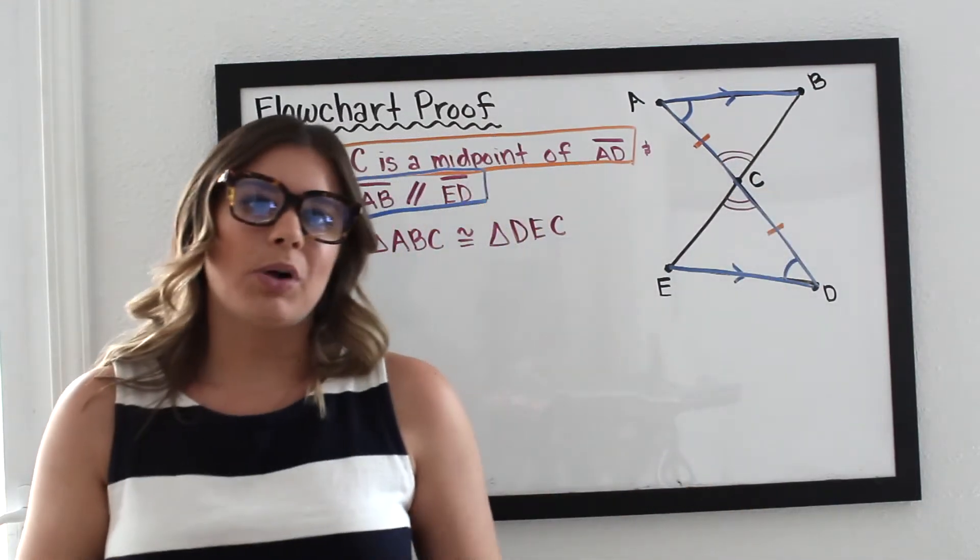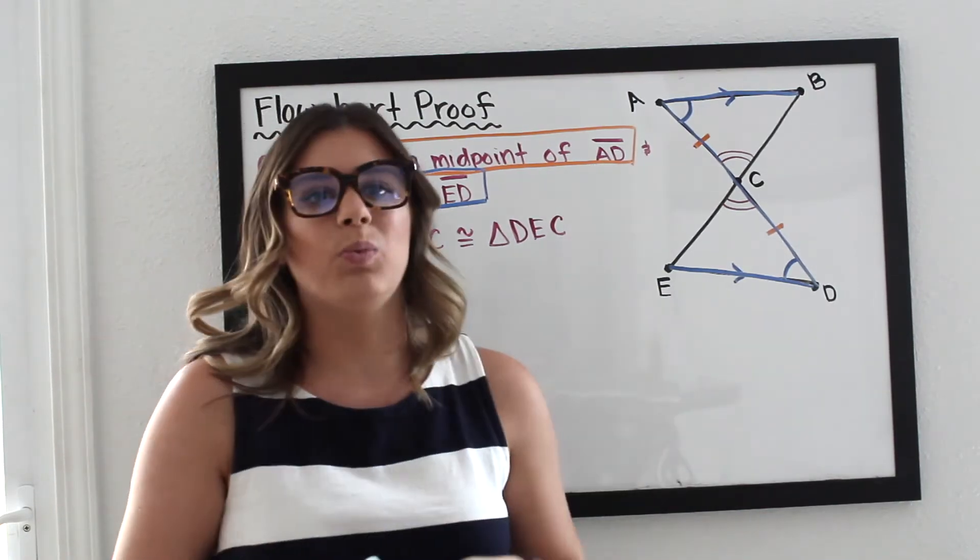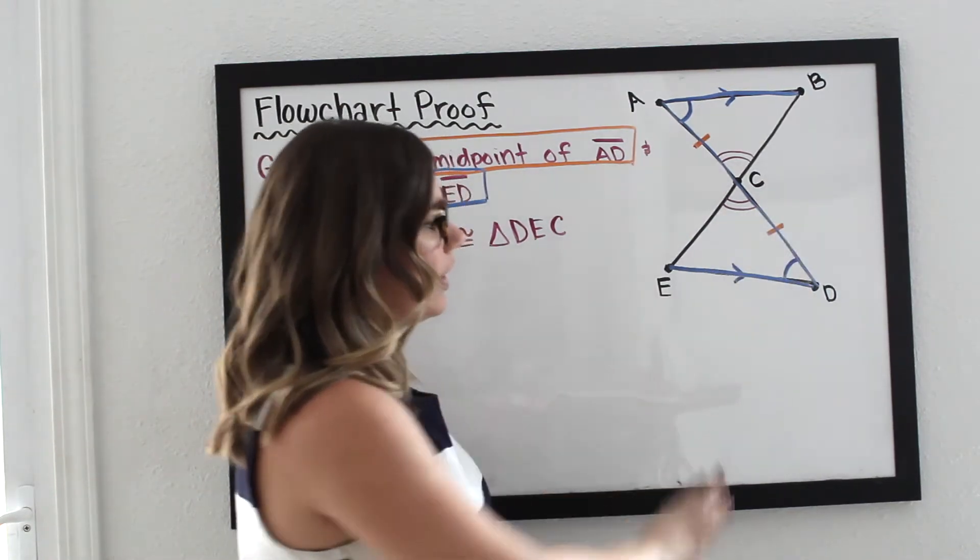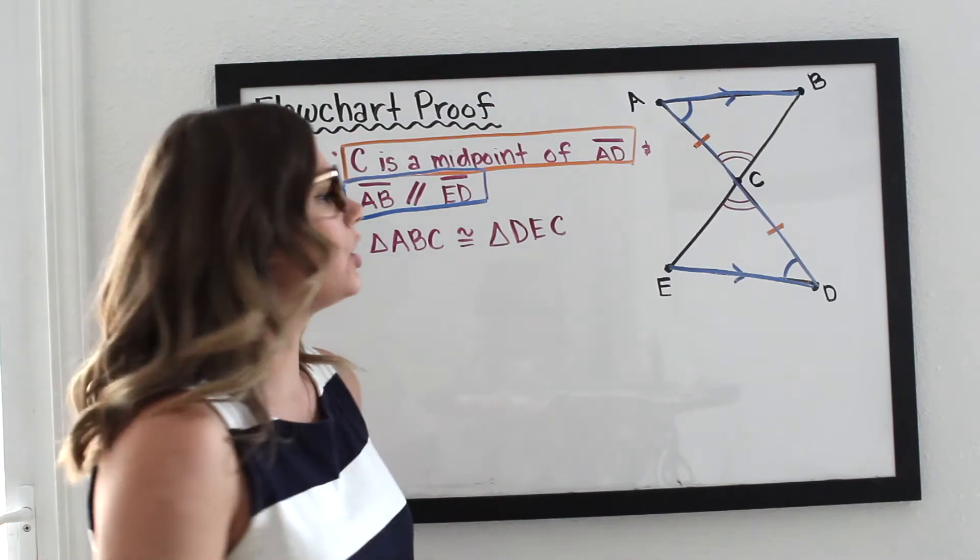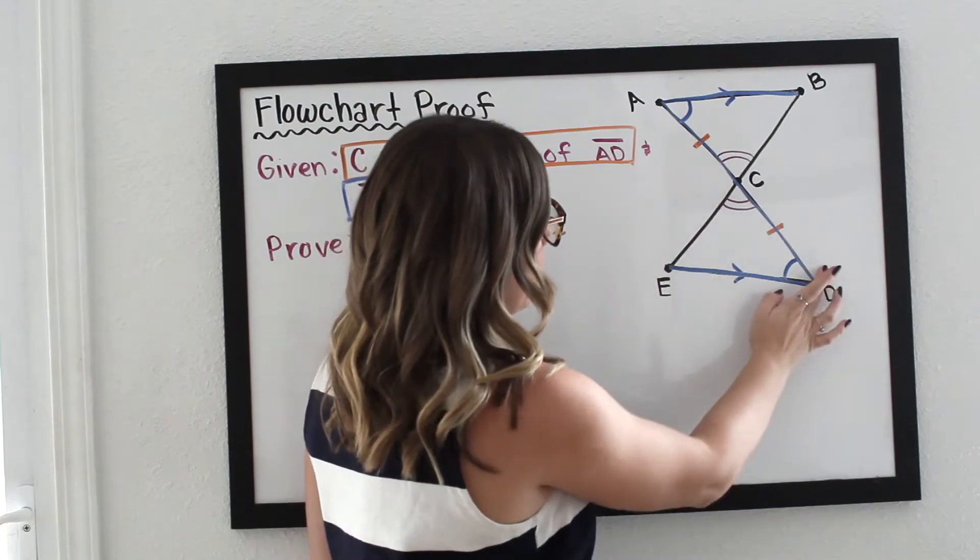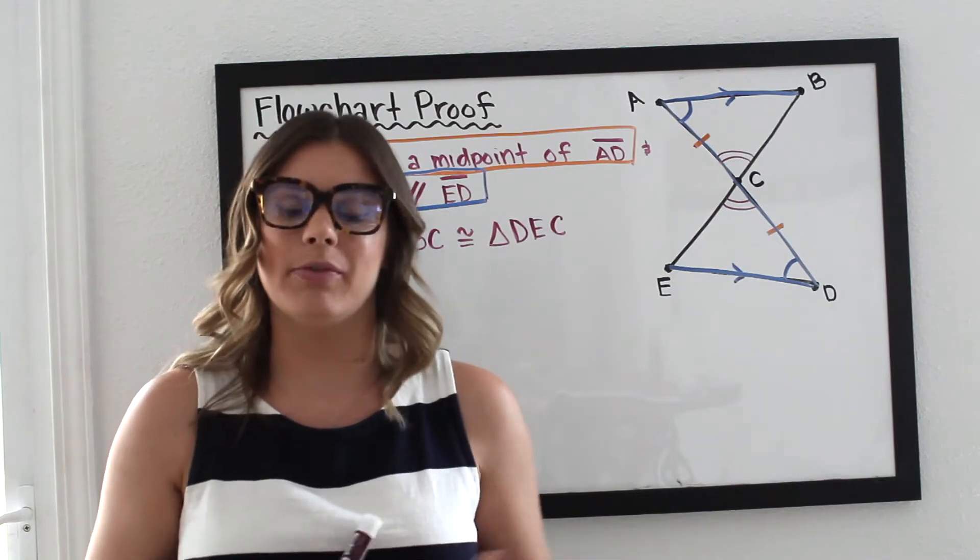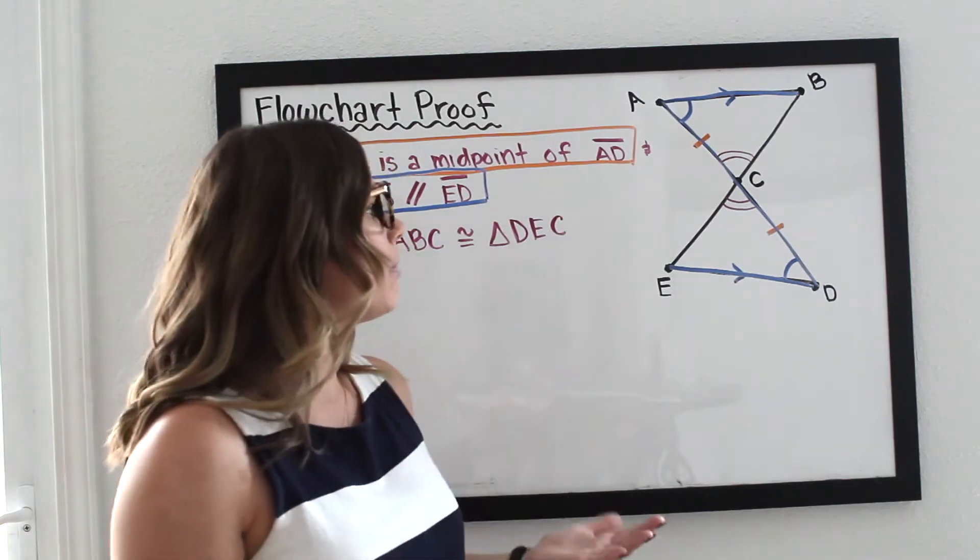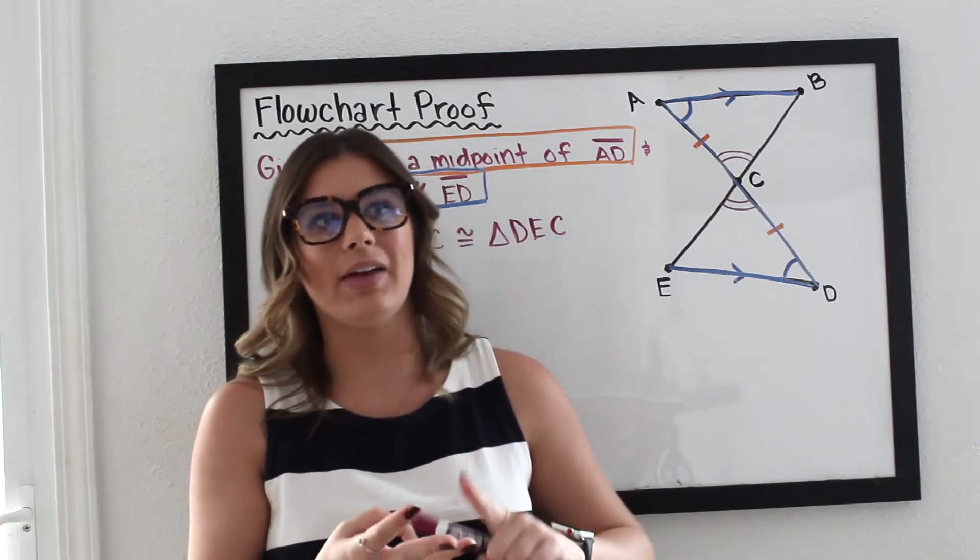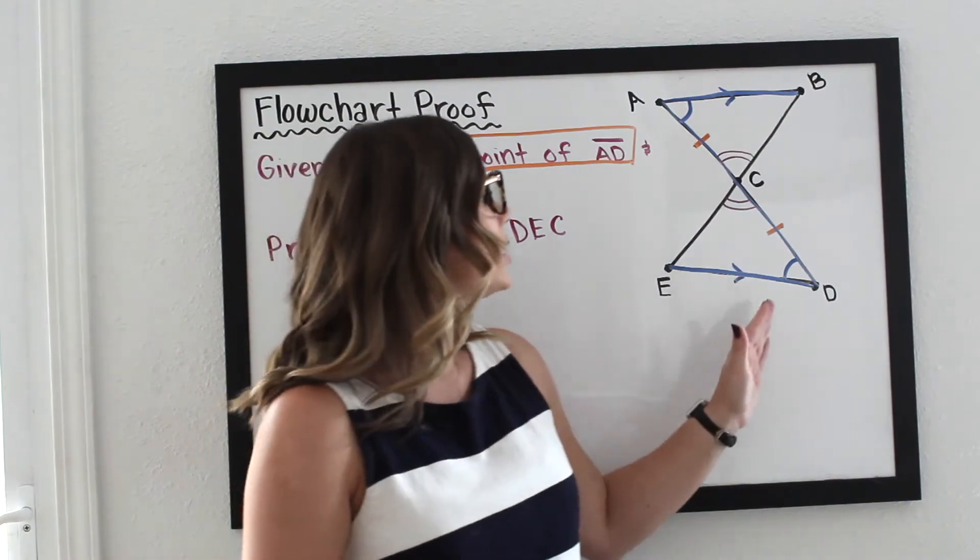The next process for this proof is I need to determine which theorem I'm going to use. Well, because I've already marked everything, it's a little easier to decide which theorem to use. So here I have angle, side, angle, angle, side, angle. So I'm going to use the angle, side, angle theorem. There are other theorems like side, side, side, side, angle, side, and hypotenuse leg, but for this one we're going to use angle, side, angle.